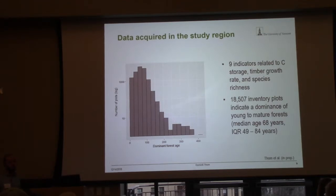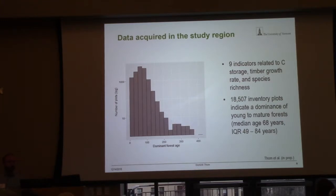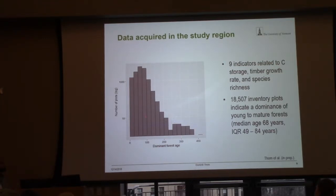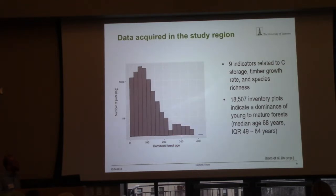This is the data we acquired. In total, 18,507 plots were included in this entire analysis, and we had nine indicators related to carbon storage, timber growth rate, and species richness data. As you can see, the distribution is quite skewed — there are lots of plots within, say, 100 years of age, shown here on a log scale so we can also see the tail. There are very few really old forests in this entire region.